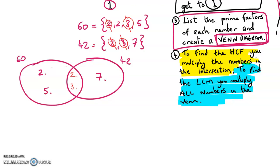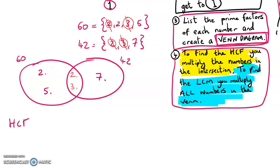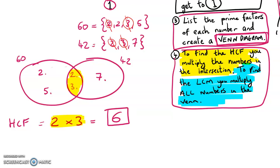So I've drawn my Venn diagram. Here's the last bit — to find the HCF, I multiply the numbers in the intersection. The numbers in the intersection are 2 and 3. So I multiply them and I get 6. That's the highest common factor. That's how you do it — you multiply the numbers in the intersection.